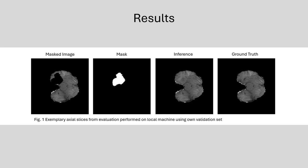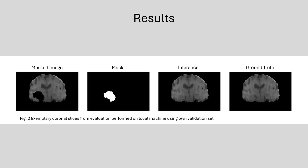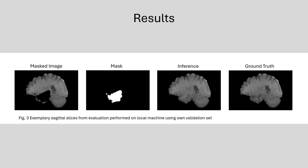Here you can see an exemplary axial slice containing the inpainting in the previously masked region. This is an example of a coronal slice. The inpainting is more consistent and contains fewer stripe artifacts compared to the inpainting our model from last year's challenge generated. However, it is slightly blurry. The blurriness is also visible in this sagittal example. Nevertheless, we think that pseudo-3D models are a promising option for 3D-consistent inpainting and deserve further exploration.